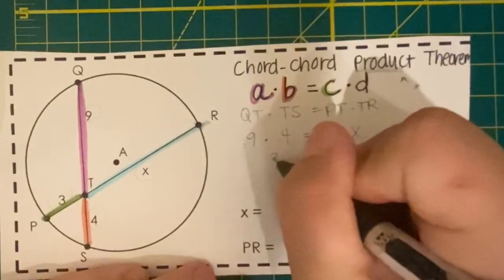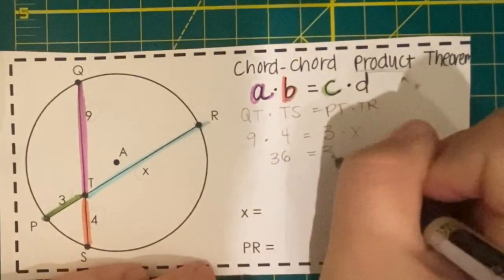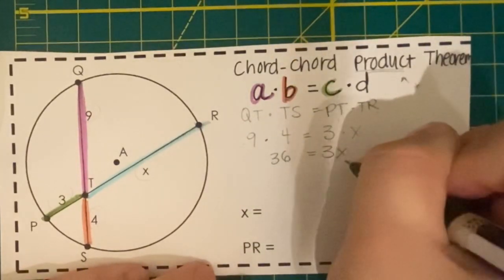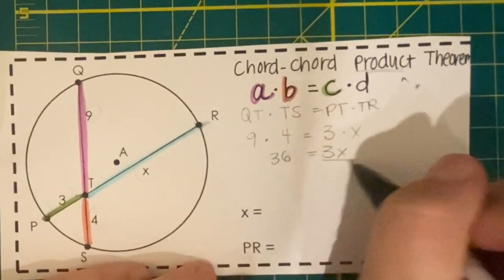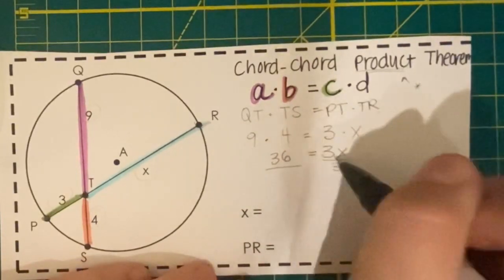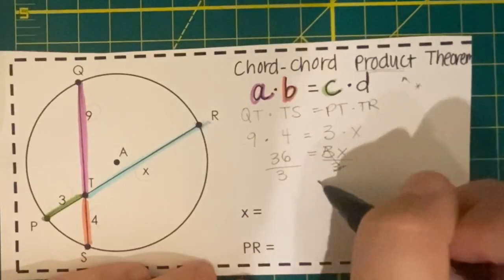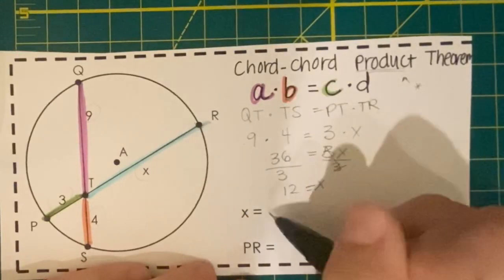9 times 4 is 36, and then we have that equal to 3x. To solve for x, all we need to do is divide by the coefficient on x, and x will equal 12.